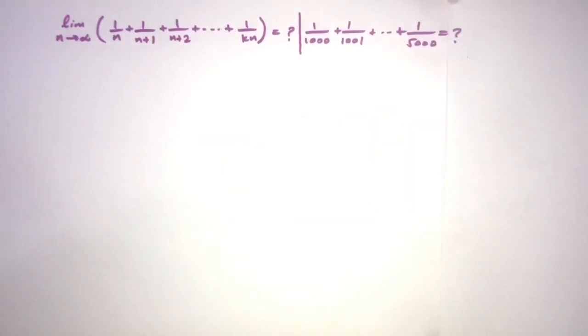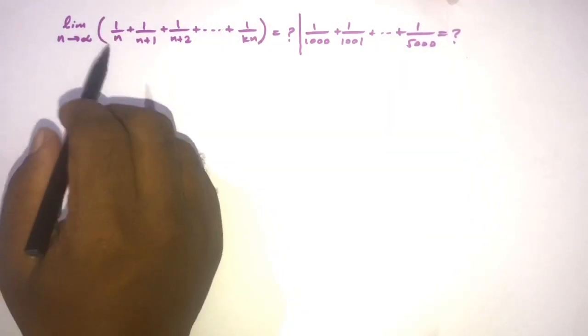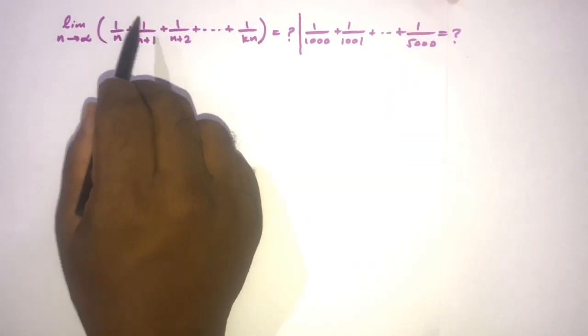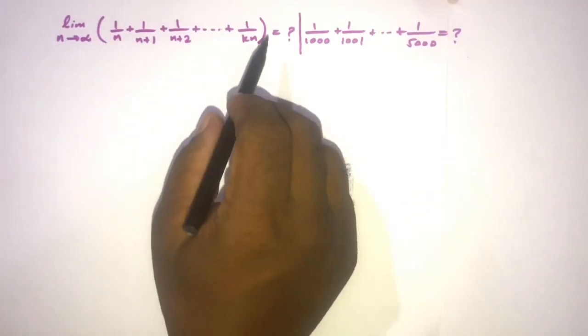Welcome to the mathematics of my channel. In this video we are going to solve this interesting limit question: limit as n approaches infinity, 1 over n plus 1 over n plus 1, and this is going to 1 over k times n, where k is a positive integer.